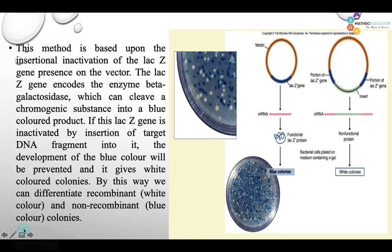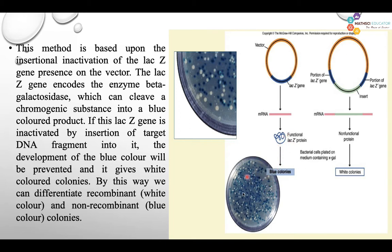How can they be differentiated? Look over here. Suppose this one is the vector — our vector of interest into which we want to insert our DNA fragment. This blue color indicates the lacZ gene. Now if this lacZ gene is present as it is, it will form mRNA, and the lacZ gene will produce the lacZ protein, also known as beta-galactosidase protein. Because of that protein, it produces a chromogenic substance that appears in blue color.